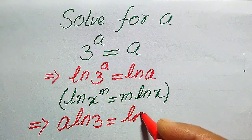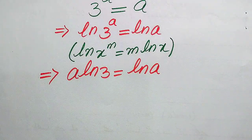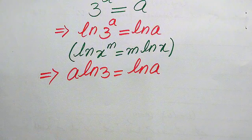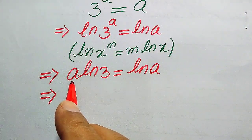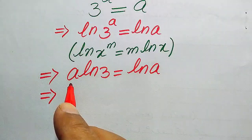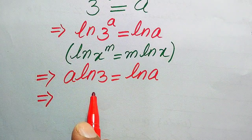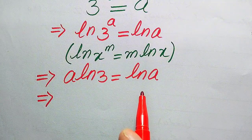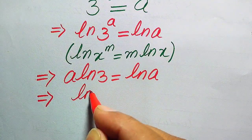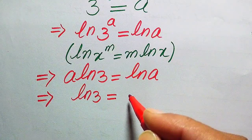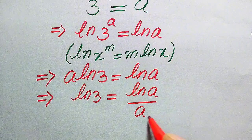Now in the next step, we need to move the variable terms to the right-hand side and the constant term to the left-hand side. Here, a is the variable term on the left-hand side, multiplied by log 3. When we move it to the right-hand side, it is divided by log a. After moving a to the right-hand side, it becomes: log 3 equals log a divided by a.